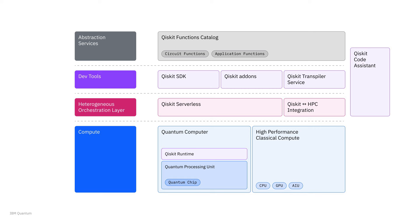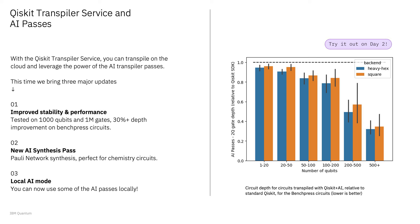Qiskit isn't the only dev tool in our software stack. Using our Qiskit transpiler service and AI-powered transpiler passes, Qiskit is able to generate circuits with fewer gates, especially as circuit sizes get larger where there's more room for optimization. For 100-plus qubit circuits, we see an average 36% improvement in circuit depth over the open-source SDK. Looking at the largest circuits between 500 and 1,000 qubits, we're getting a 70% improvement in circuit depth. The Qiskit transpiler service is available now to all premium users as a preview.